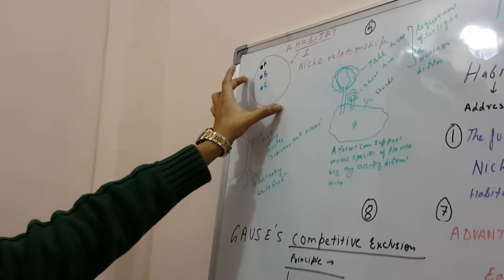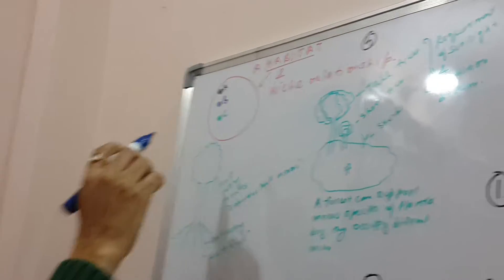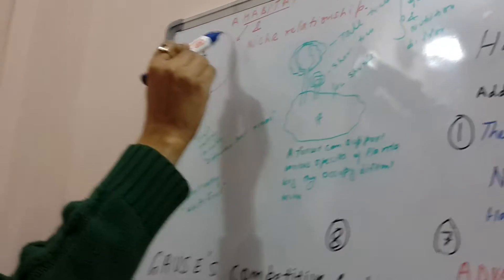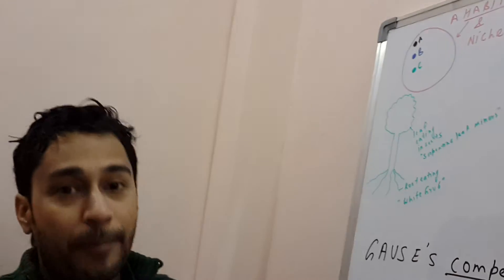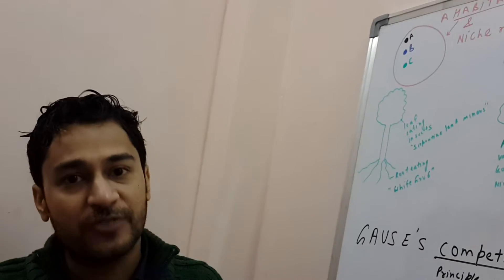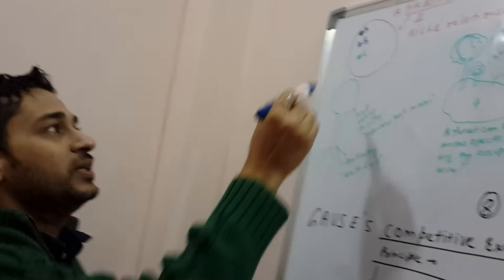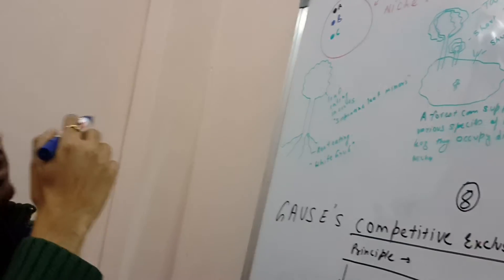Now, if we look at a certain habitat, for example, this is a certain habitat. Now, several species can live in the same habitat, but they would all have a specific unique role. For example, A, B, C, they have specific unique roles.